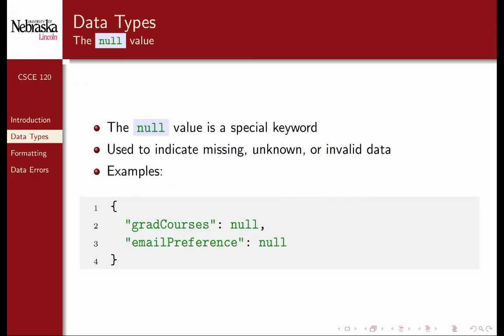There is a special value called the null value. It's a special keyword, just like true and false, so we don't use double quotes to denote it. It's used to indicate missing, unknown, or invalid data. For example, grad courses can be set equal to null using the null keyword directly to indicate that there are no grad courses.